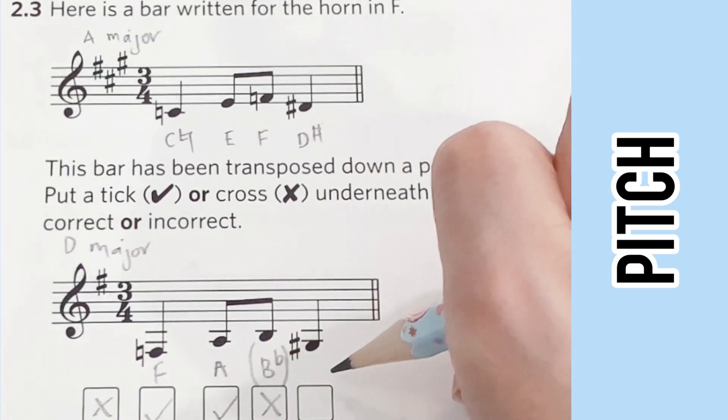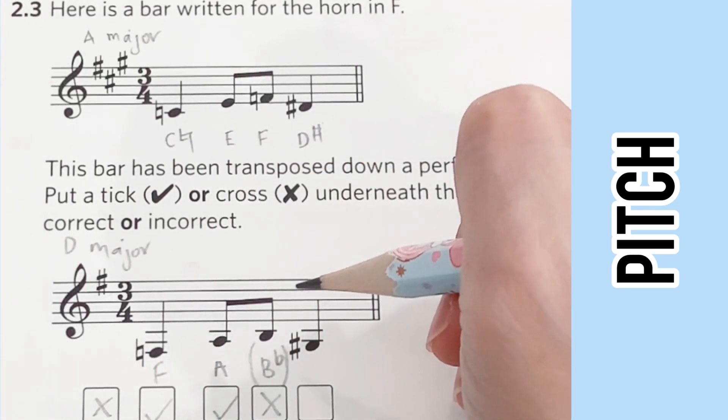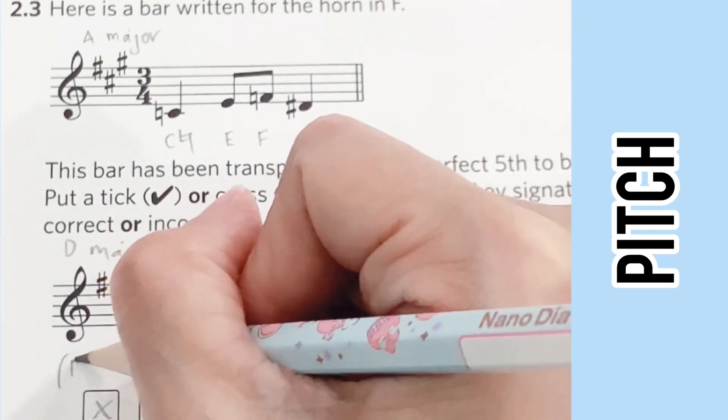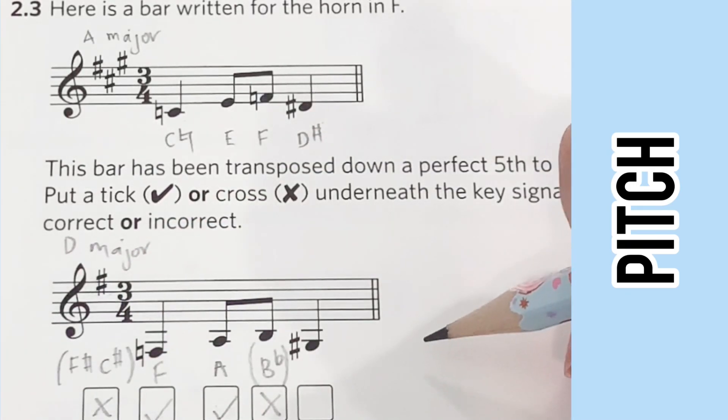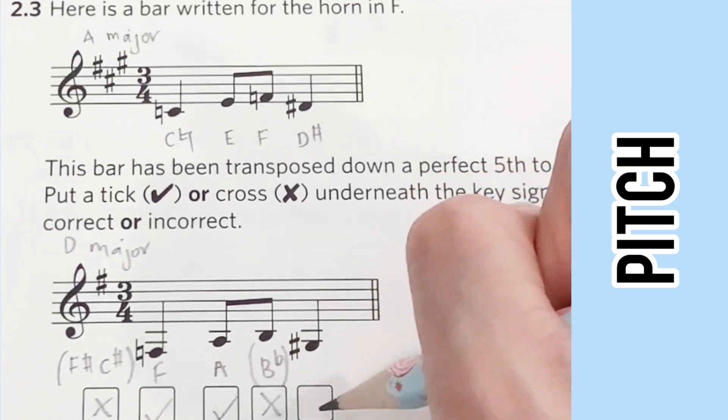So this should be the correct answer. I should have included the correct answer for the key signatures as well—it should have been F sharp and C sharp. Finally, a fifth lower from D sharp is G sharp, which is correct.